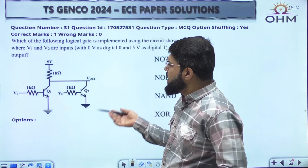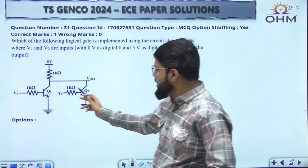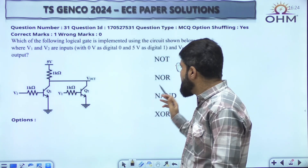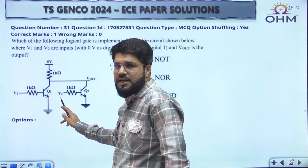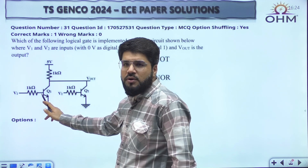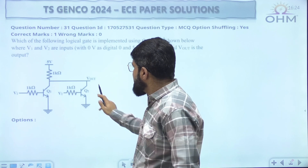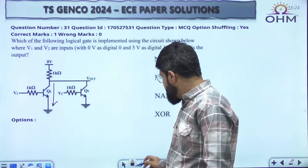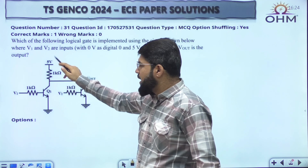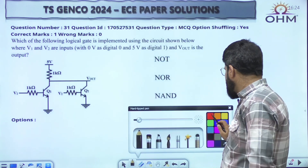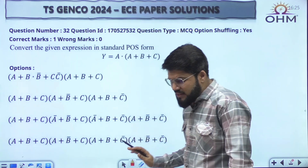Which of the following logic gates is implemented? It's a simple resistor-transistor logic circuit. If you have studied RTL formally, you can directly see that these two NPN transistors are connected in parallel, and it's going to be a NOR gate. You can verify: if V1 or V2 is high, the BJT switch closes, Vout connects to ground, and output is zero. Only when both inputs are zero is Vout high — output equal to one. That is the functionality of a NOR gate.